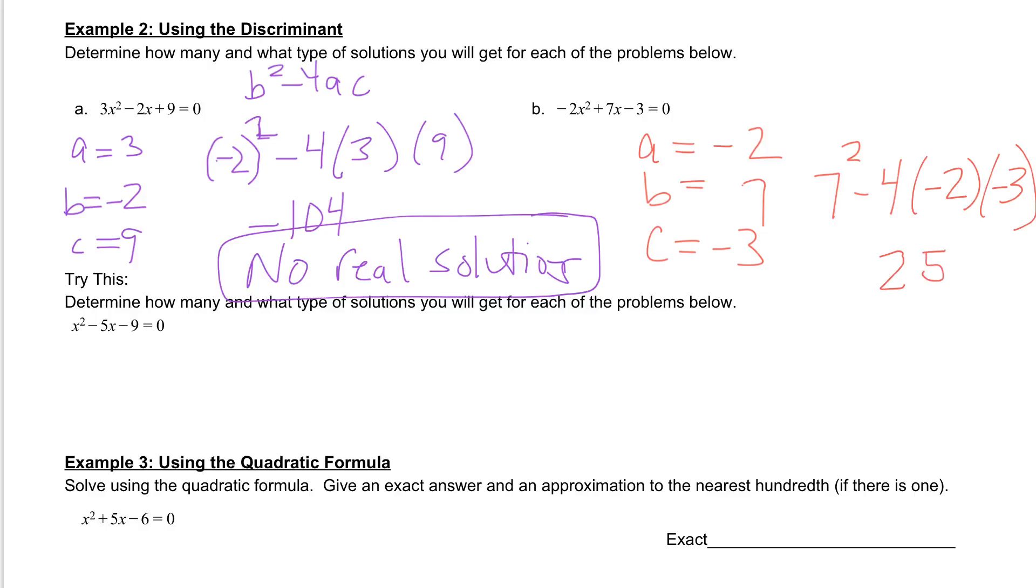If you plug that in your calculator you should see your discriminant is 25. So 25 is a positive number which tells us we have 2 answers. And if we take a look at it, 25 is a perfect square. It's 5 times 5. So this tells us that we will have 2 rational answers.